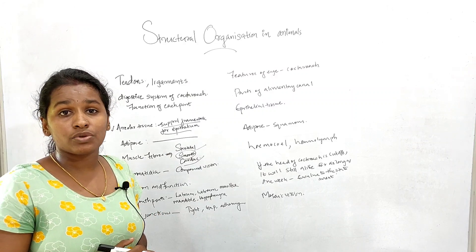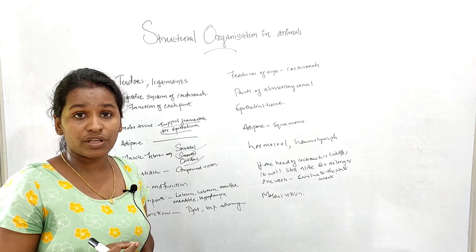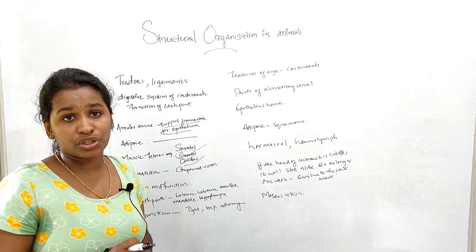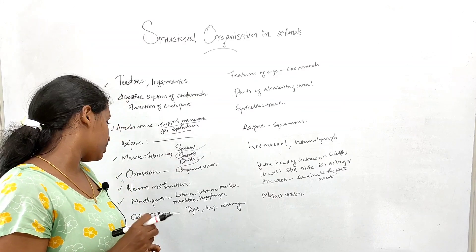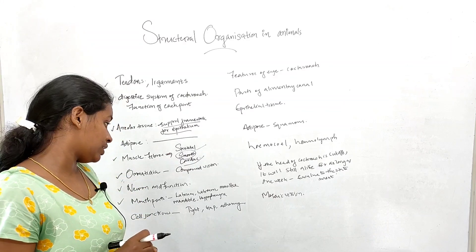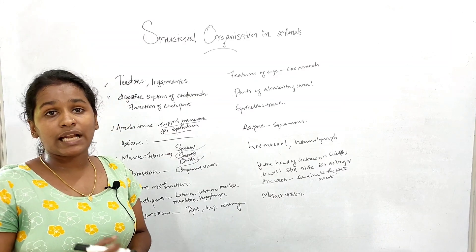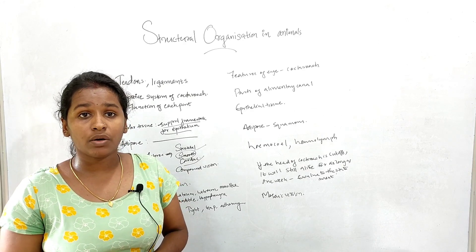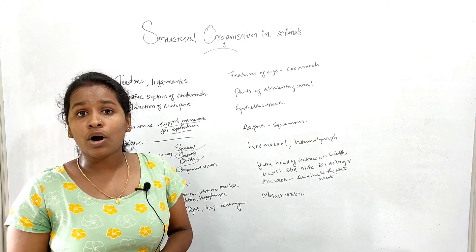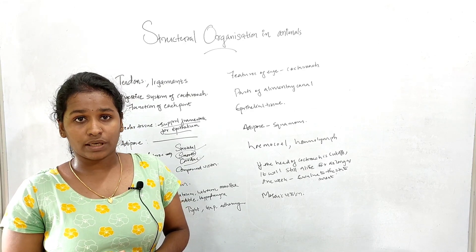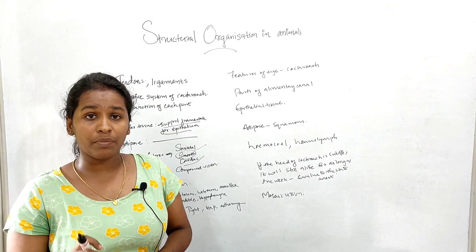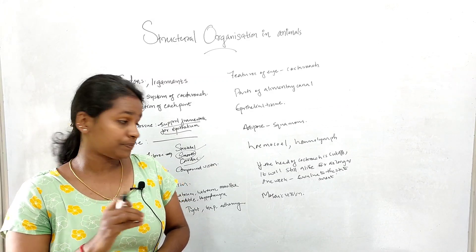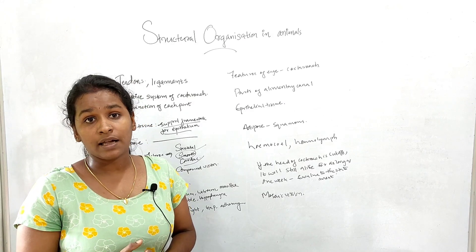Neural tissue is also known as a basic unit. Neural cells are known as neurons. It is important to know that the mouth parts of the cockroach are very important: labium, labrum, maxilla, mandible, and hypopharynx.